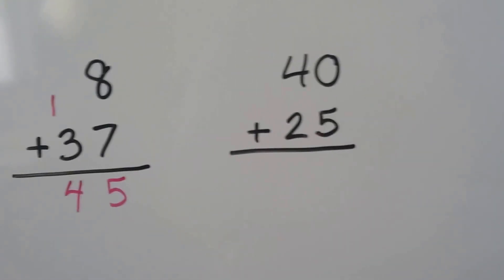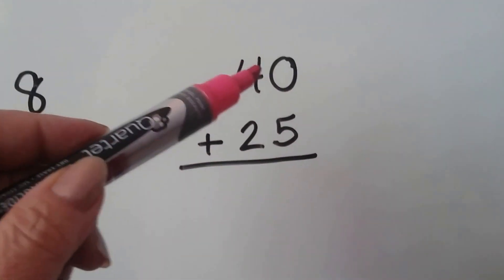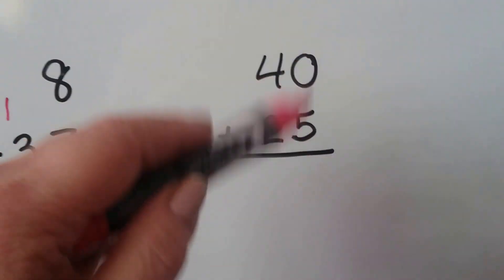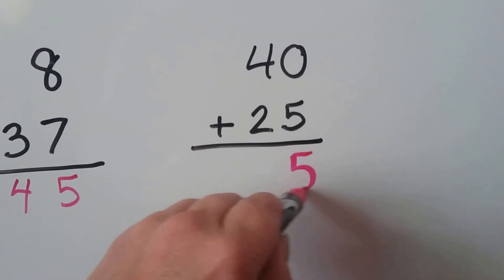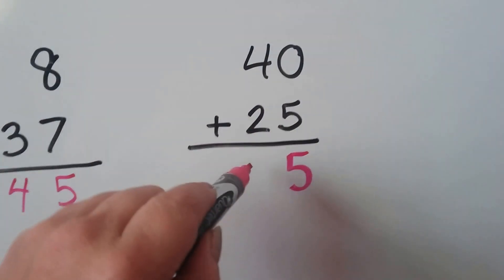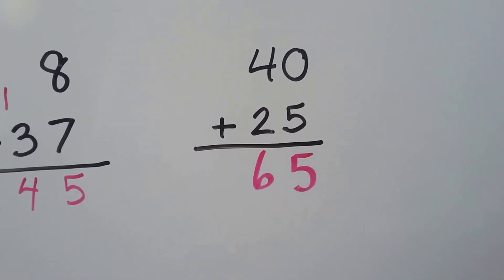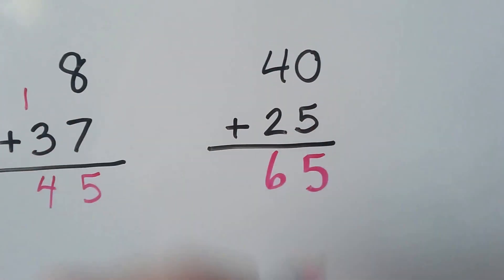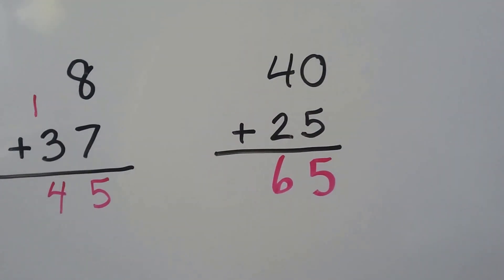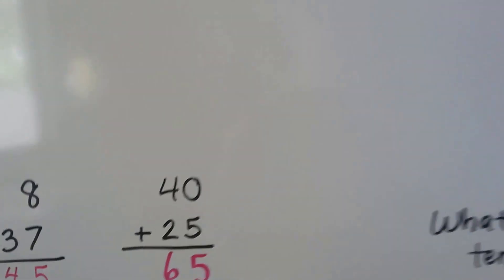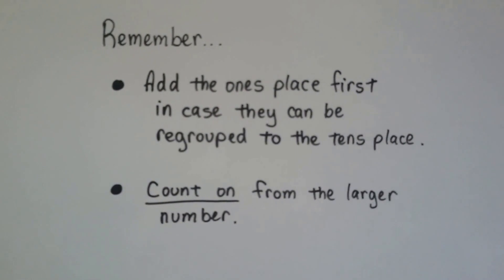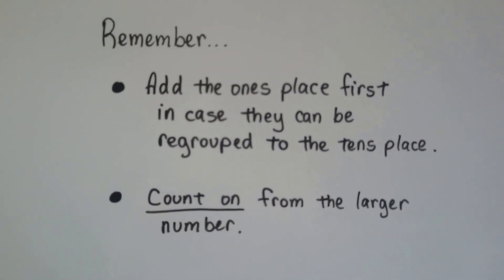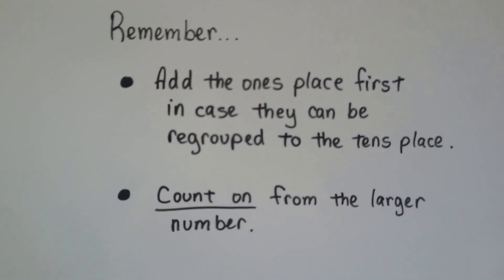Let's try one last one. We have 40 plus 25. We add the ones place. 5 plus 0 is 5, right? And 4 plus 2 is 6. We didn't need to regroup here, did we? We didn't have enough ones to make a 10. So just remember, add the ones place first in case they can be regrouped to the tens place. We count on from the larger number.